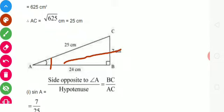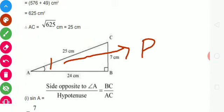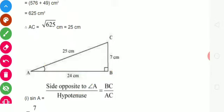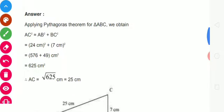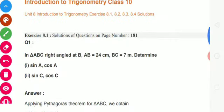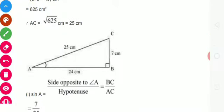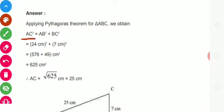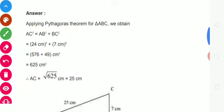Agar A ko acute angle liya gaya hai, toh A ke saamne waali side — opposite side — ko haam perpendicular bolte hain. 90 degree ke saamne waali jo side hoti hai, usko haam hypotenuse bolte hain. Aur acute angle ki adjacent side ko haam base bolte hain. Question mein diya hua hai AB aur BC, aur AC find out karna hai. AC haam loog find kar sakte hain Pythagoras theorem se: AC square is equal to AB square plus BC square. Value put karne par 625, square root 25 is 25. Toh AC ka value nikal gaya — hypotenuse = 25 cm.